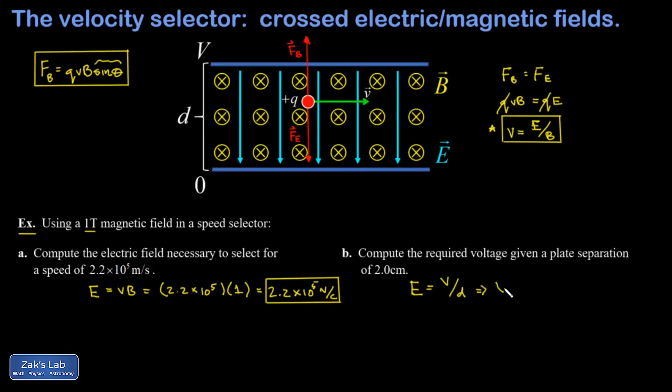Solving this for V and plugging in the numbers. And I'll go ahead and show the units on this. I can write units of electric field as volts per meter if I like. And then my plate separation would be, just shifting the decimal place a couple times, 0.02 meters. And I find a required voltage of 4,400 volts.